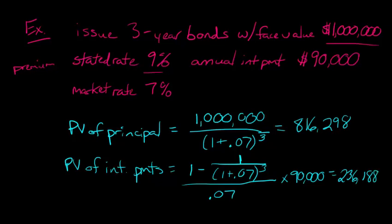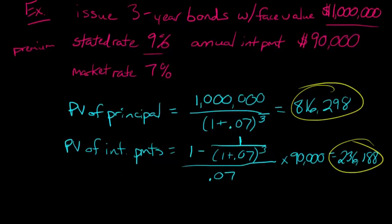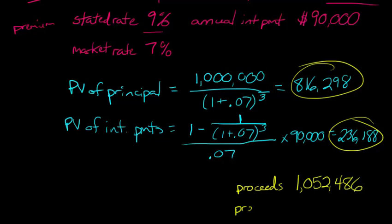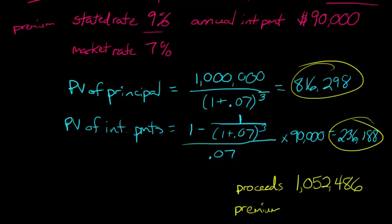When we add the present value of the principal and the present value of the interest payments together, that gives us the amount of proceeds we're getting when we issue these bonds — the amount of cash we receive — which is $1,052,486. Here's where you see the premium: we're raising $1,052,486 but only have to pay back $1,000,000 in three years. So the premium is $1,052,486 minus $1,000,000, giving us a premium of $52,486 on this bond issuance.